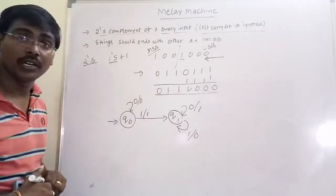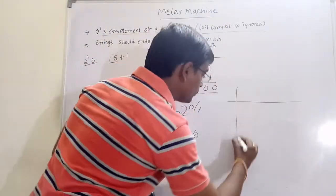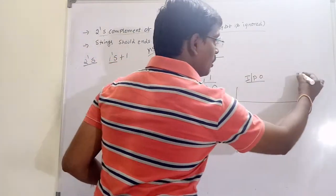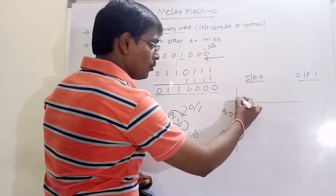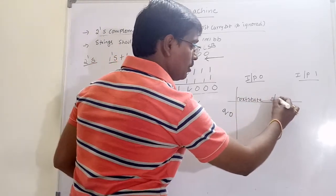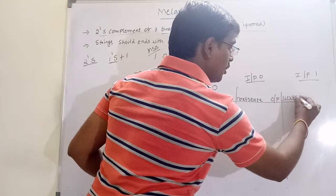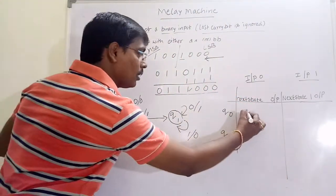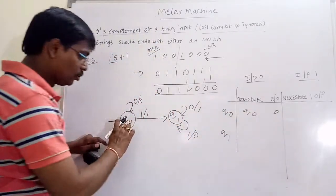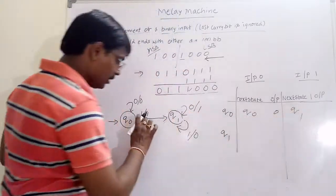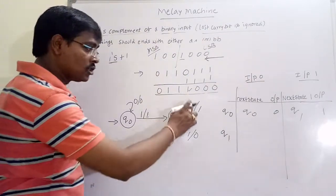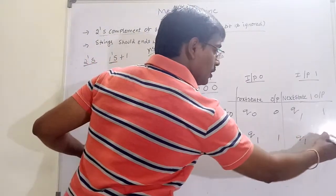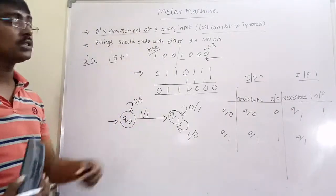Now let's construct the transition table. The states are q0 and q1, with two inputs: 0 and 1. Each entry shows the next state and output. From q0 on input 0: next state q0, output 0. From q0 on input 1: next state q1, output 1. From q1 on input 0: next state q1, output 1. From q1 on input 1: next state q1, output 0. This is the Mealy machine for the 2's complement of a binary number.